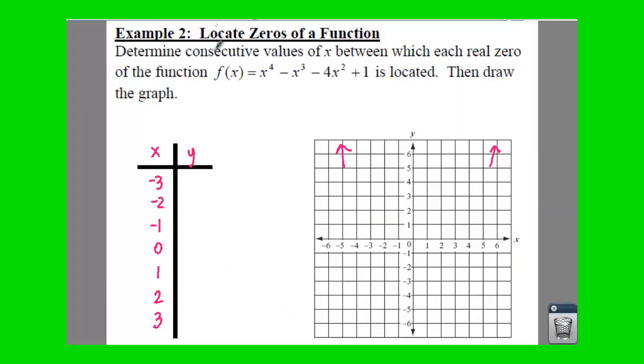So we have 73, large number. That won't be too easy to graph. Nine. Then we have a negative one, one, negative three, negative seven, and a 19.